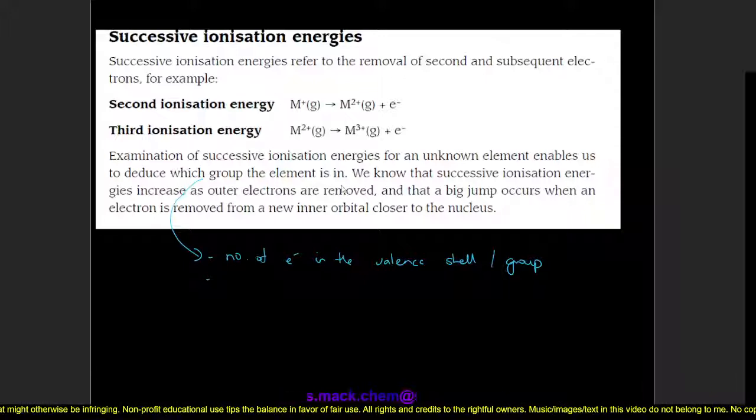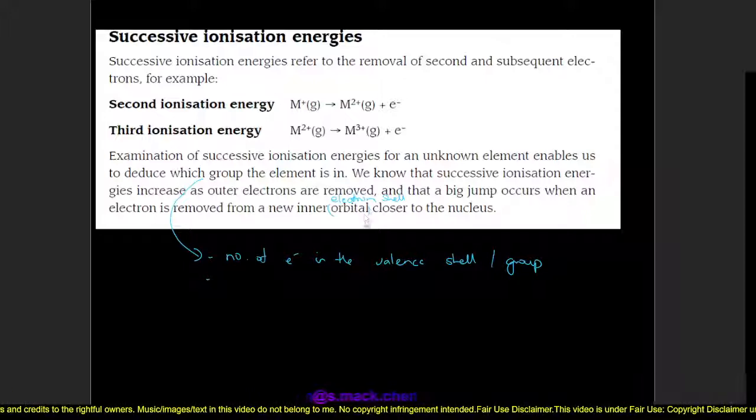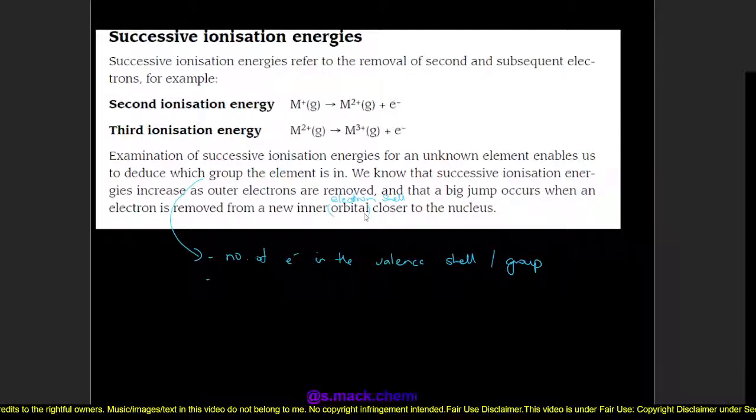meaning that as we keep removing electrons, it's going to get higher and higher, or it takes more energy. But a big jump should occur when an electron is removed from a new inner orbital, or in this case, a new inner electron shell, where that inner electron shell is closer to the nucleus.